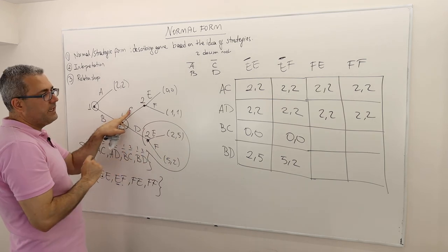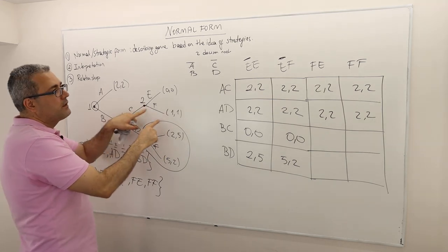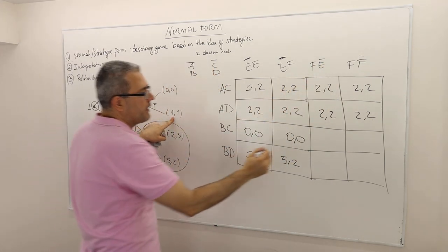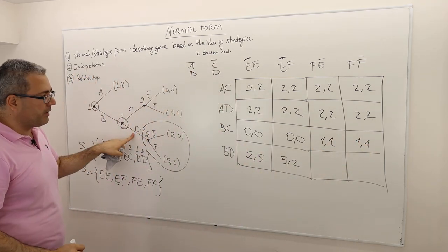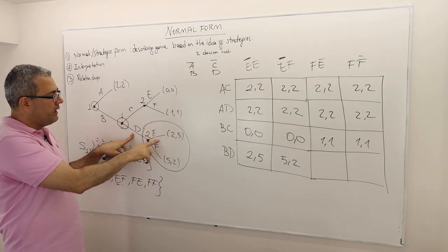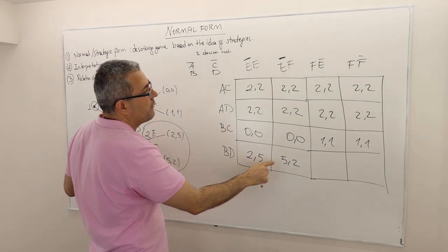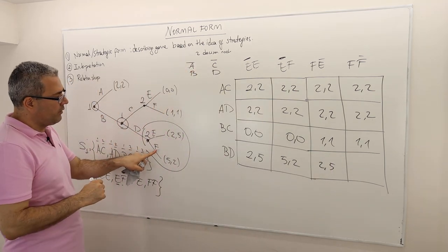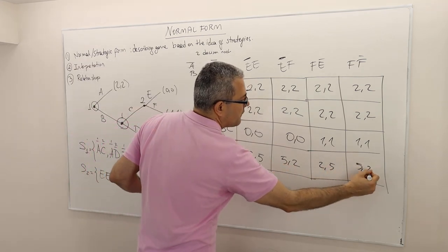For BD, the first components are irrelevant — only the second component matters. When the second component is E (EE or FE), the payoff is 2, 5. When the second component is F (EF or FF), the payoff is 5, 2.